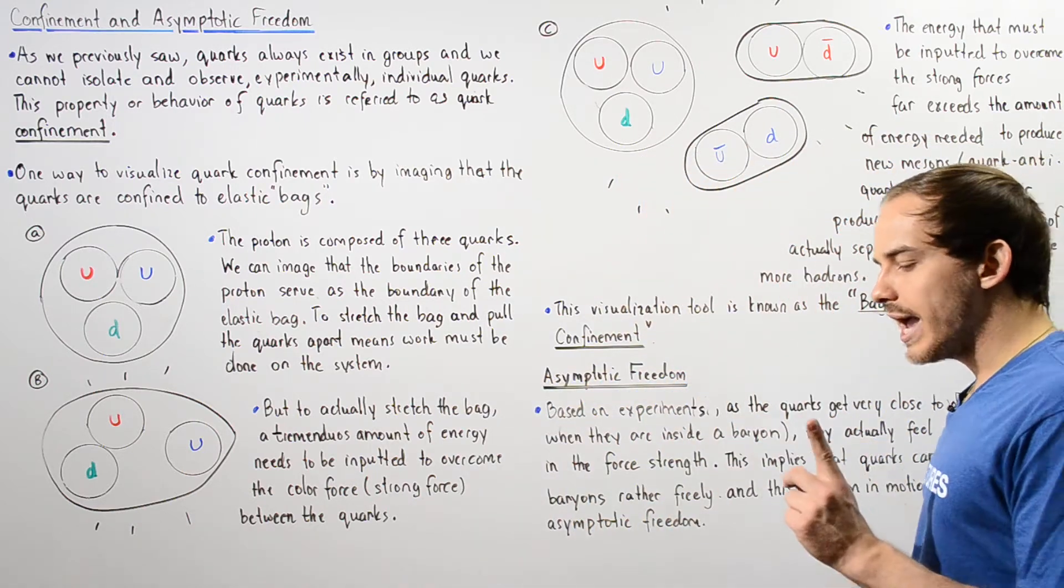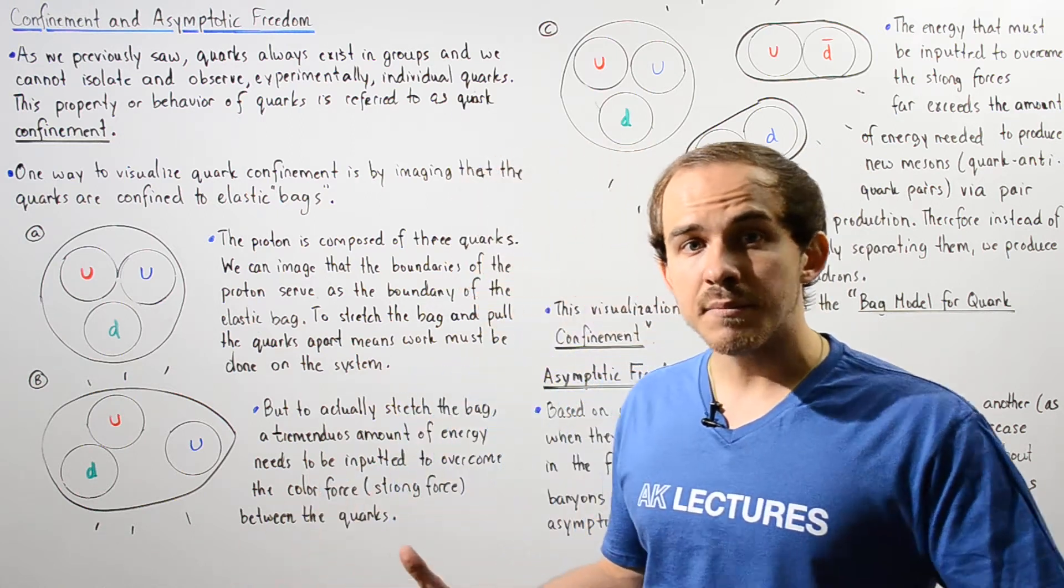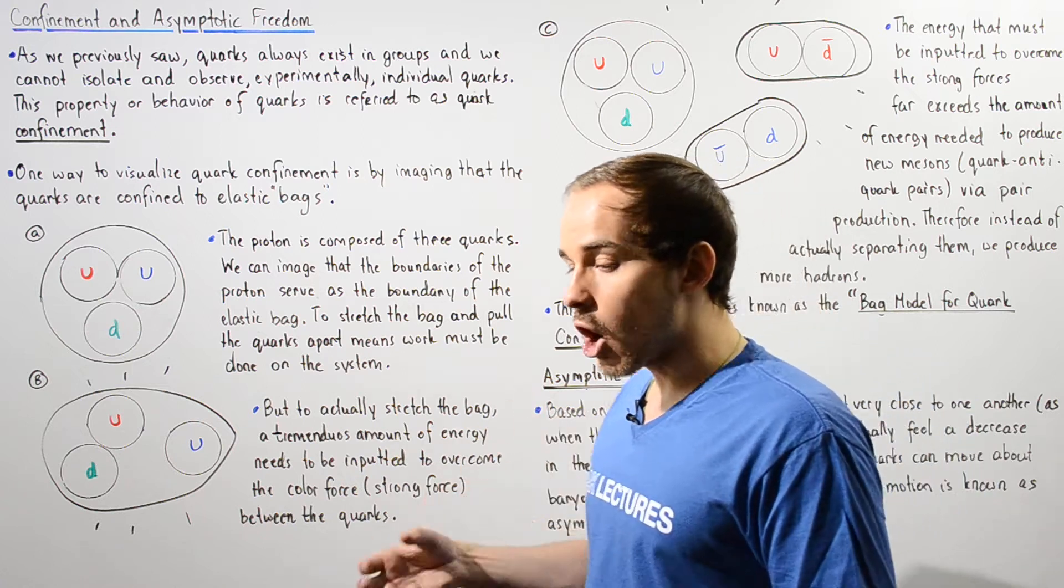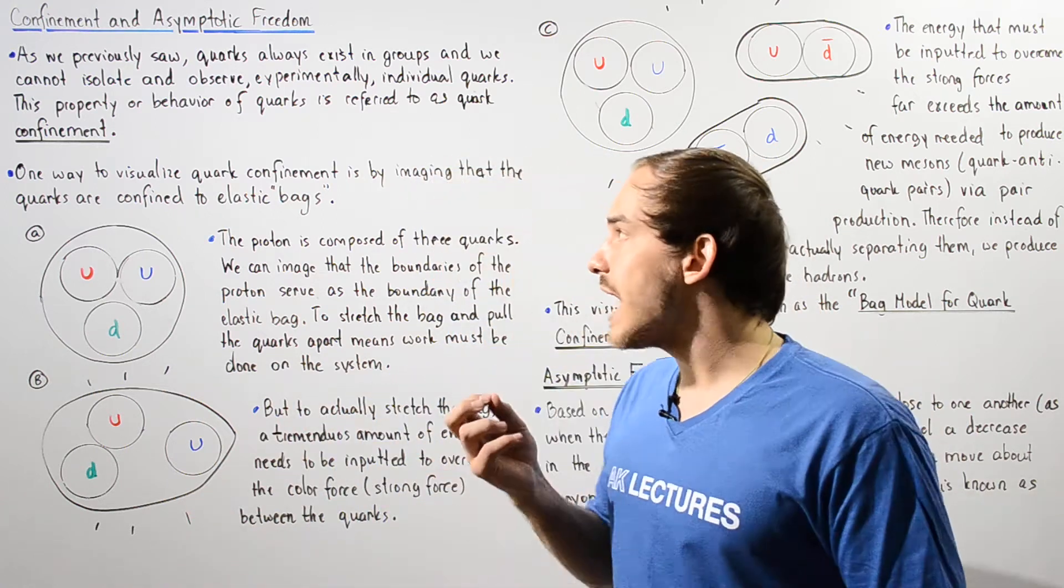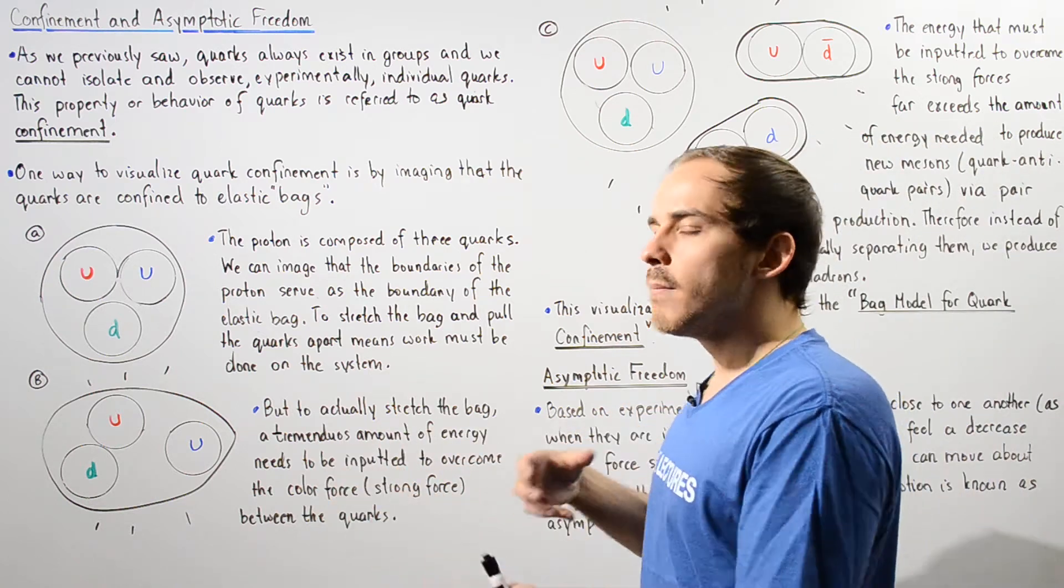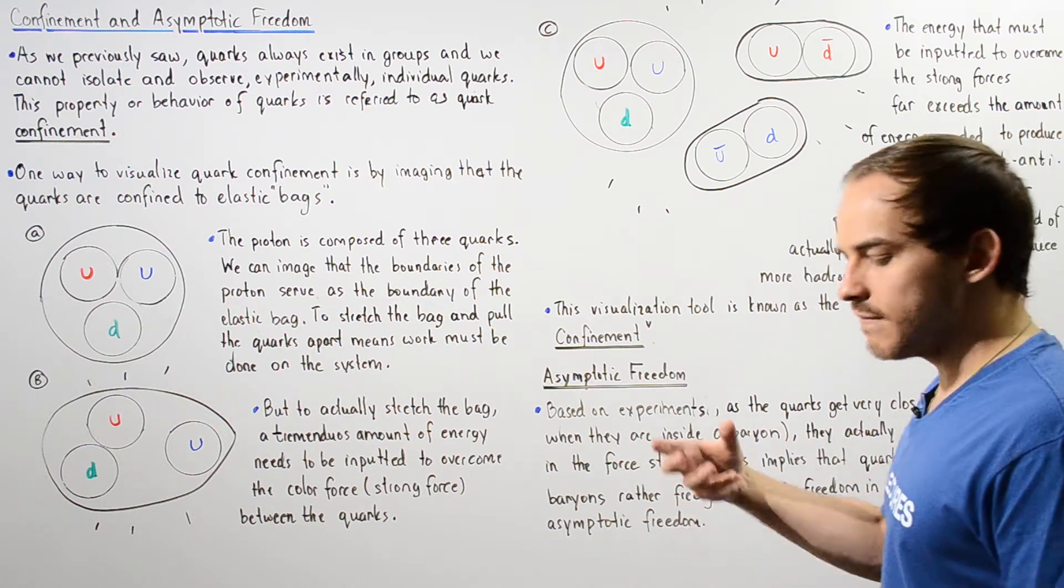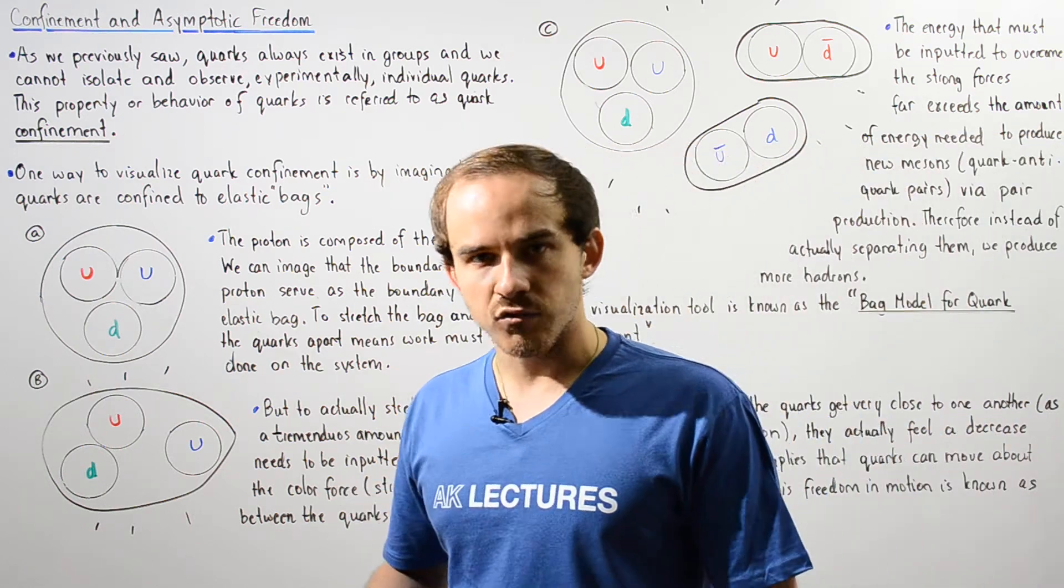One way that helps us to visualize quark confinement is by imagining that our quarks are confined to an elastic bag, an elastic bag that can be stretched. But to stretch this bag, we actually have to input a great amount of energy, a great amount of work.